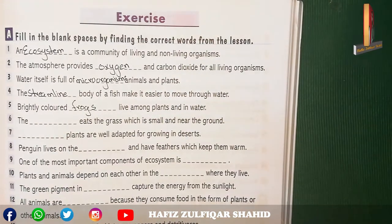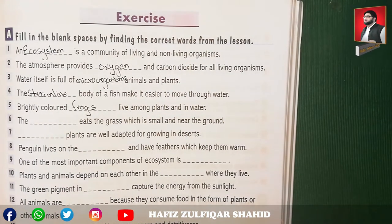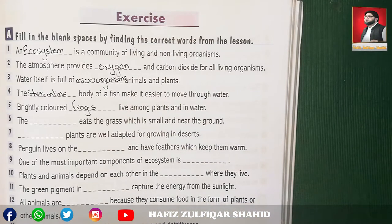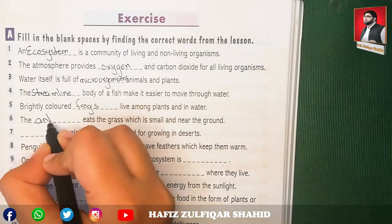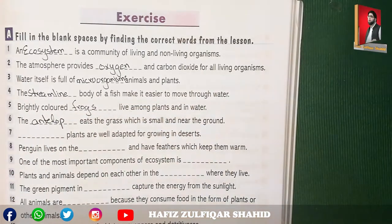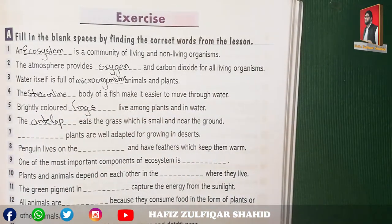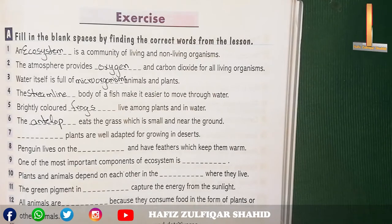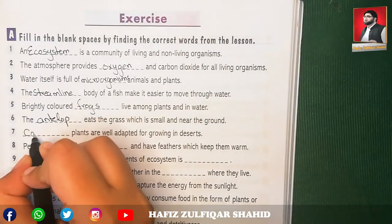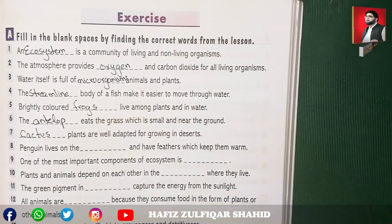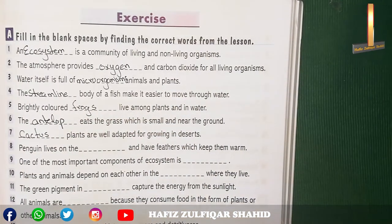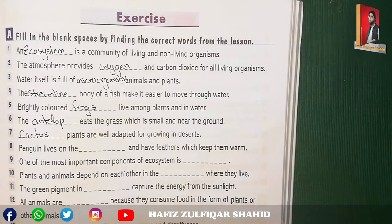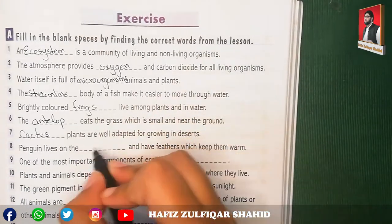Number six: the antelope eats grass which is small and near the ground — this refers to the grassland habitat where grass is low and close to the ground. Number seven: cactus plants are well adapted for growing in the desert. Number eight: penguins live in the South Pole and have feathers which keep them warm.